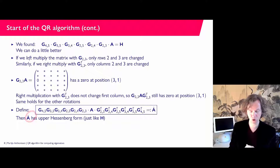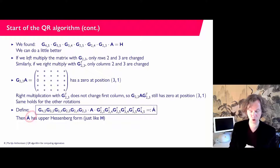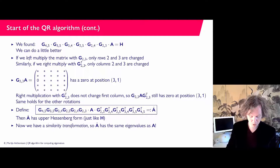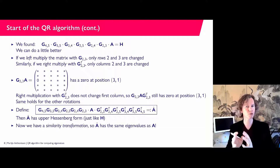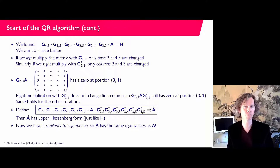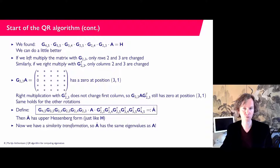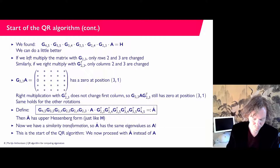This matrix Â has upper Hessenberg form just like H, because the zeros remain at the same positions, and it is also a similarity transformation so it has the same eigenvalues as A. This is a preparation step: we transform our matrix into upper Hessenberg form. During the iteration, computing the QR decomposition of this Hessenberg matrix is much cheaper because we only need to zero out the one extra lower sub-diagonal. This is the start of the QR algorithm, and we work with Â rather than A — done only once.